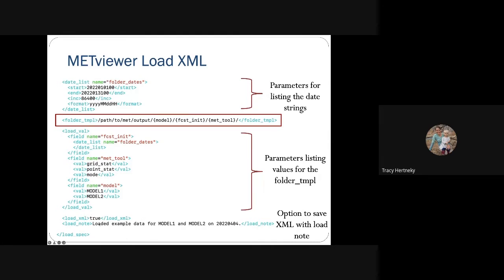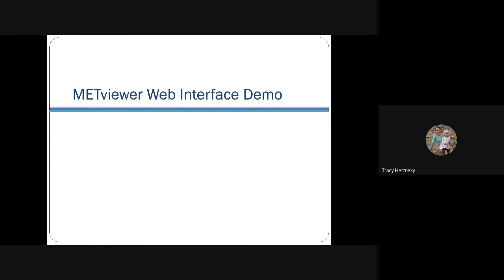The bottom two load lines are options to save an XML with a load note. If you wanted to include a load note while loading your data, you would set this to true — it just tells you what data was loaded or whatever you want to put in that load note. That is the entire MetViewer load XML. One thing not shown here is you can also define what line types you want to load, such as FHO or contingency table counts. If you don't define a line type, it will load all line types that are in the data you're asking to load.